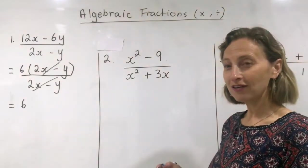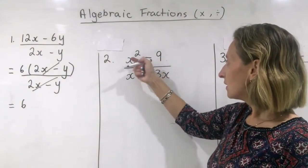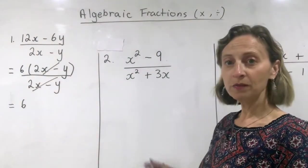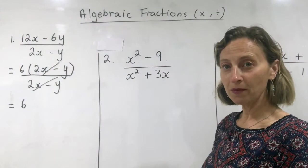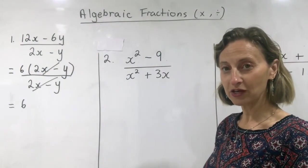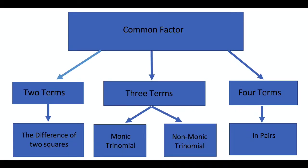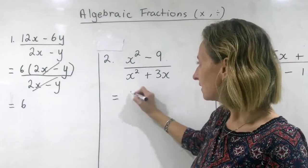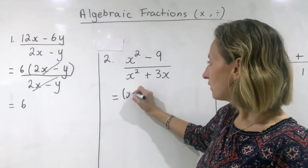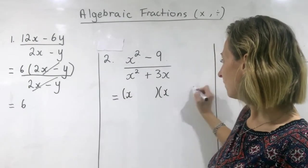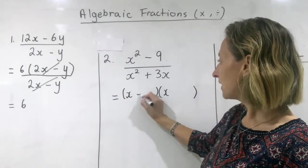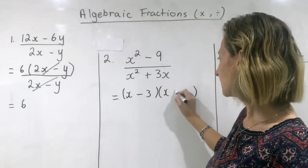Moving right along. Two terms, no common factors — don't forget about our flowchart. No common factors, two terms — that means it's the difference of two squares. Hopefully you can all write it out quite quickly now: minus three, plus three.